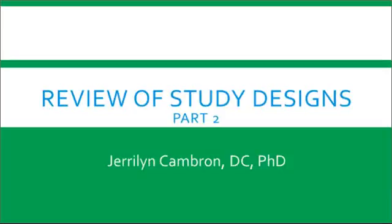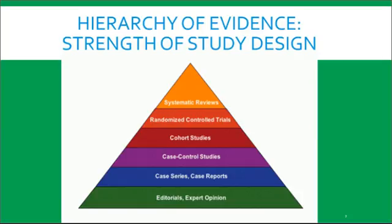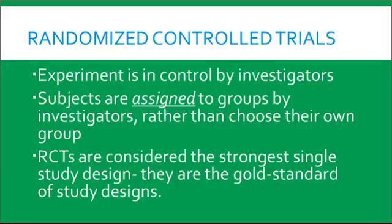We're going to continue talking about study designs, as well as the different tables and figures that we might find within them. Last week, we were talking about the observational study designs, and today we want to move on to the randomized controlled trials. Clinical trials, or RCTs, are considered the strongest study design, because the subjects are assigned to groups rather than subjects choosing which group they want to be in. This randomization factor helps decrease bias.